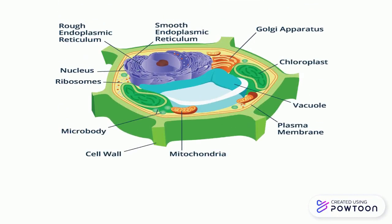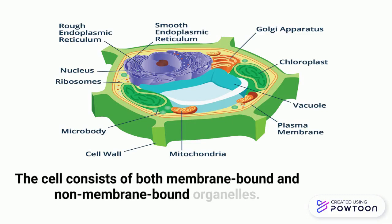This is the cross-section of the cell. When you observe our pictures, it consists of other sub-cellular parts of the cell. That means the cell consists of both membrane-bound and non-membrane-bound organelles.